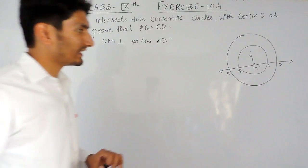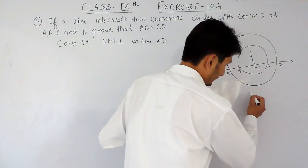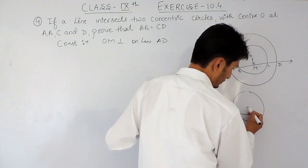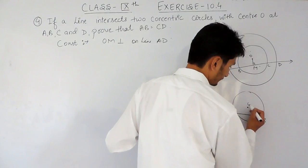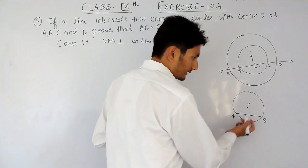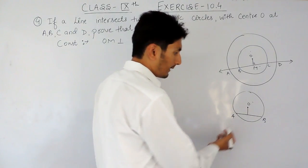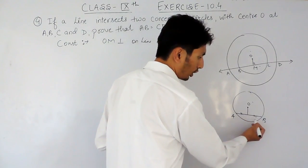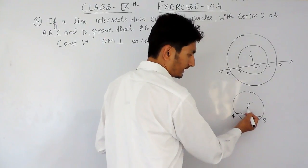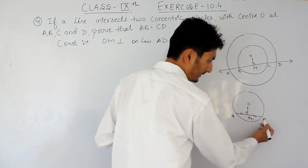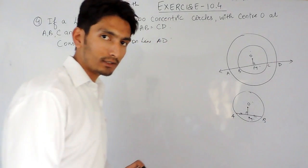Now, the second thing is, we know a theorem which states that the perpendicular from the center bisects the chord. Means, if OM is the perpendicular on this AB, it will bisect the chord.